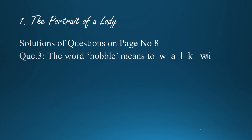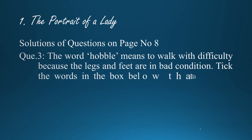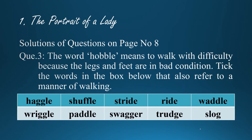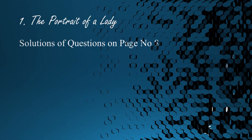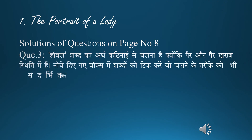Question 3: The word 'hobble' means to walk with difficulty because the legs and feet are in bad condition. Tick the words in the box below that also refer to a manner of walking. — 'Hobble' shabd ka arth hai takleef se chalna kyunki pair kharaab sthiti mein hain. Neche diye gaye box mein shabdon ko tick karein jo chalne ke tarike ko bhi sandarbhit karta hai. Haggle, shuffle, stride, ride, waddle, wriggle, paddle, swagger, trudge, slog.